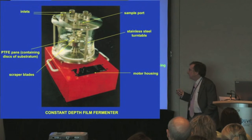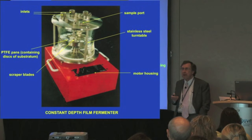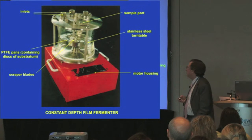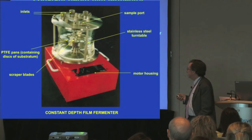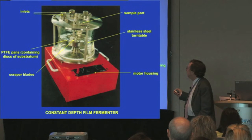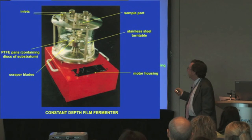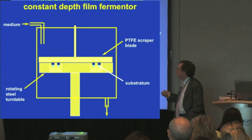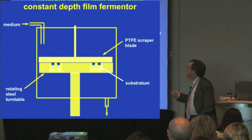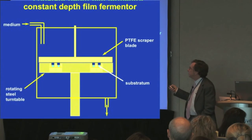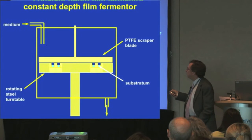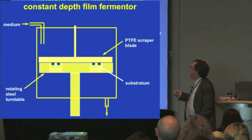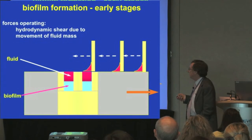We have used the constant-depth film fermenter, which can be regarded as an artificial mouth, because it provides all of these features. It consists of a rotating turntable which rotates under a scraper blade. In that turntable, we have PTFE pans which are recessed to a particular depth. We can preset these depths so we can grow biofilms to any particular depth. The medium comes in, this circulates, the bacteria accumulate in these regions, and once they reach a certain height, they are scraped off so that we maintain biofilms with a constant depth.